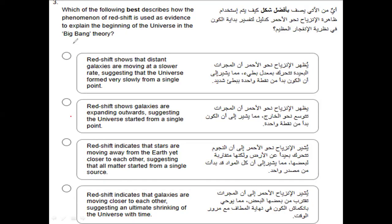Now this one is about the Big Bang theory. Make sure you know what the Big Bang theory is. The question asks: which of the following best describes how redshift is used as evidence to explain the beginning of the universe? Option A says redshift shows distant galaxies are moving at a slower rate, suggesting the universe formed very slowly — the 'single point' part is correct, but 'very slowly' doesn't make sense.